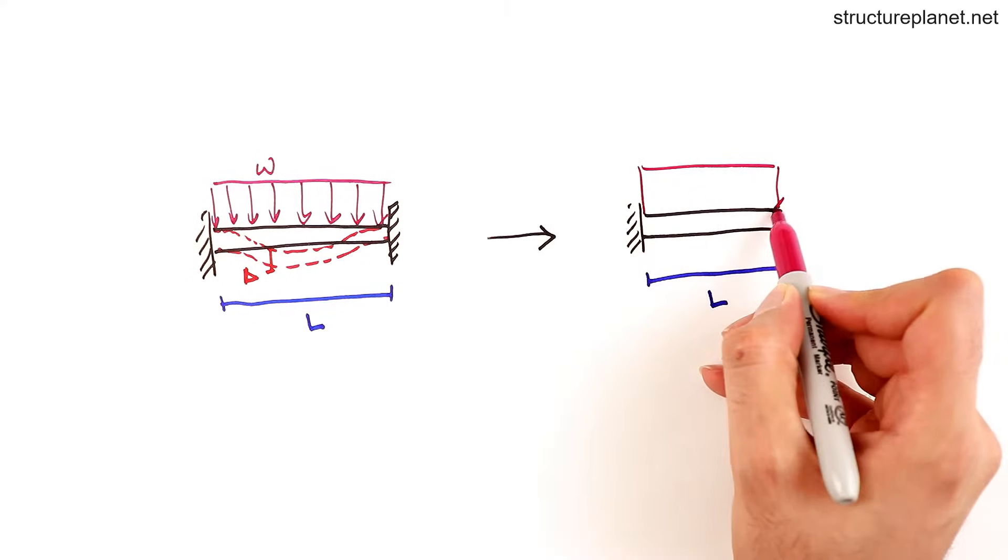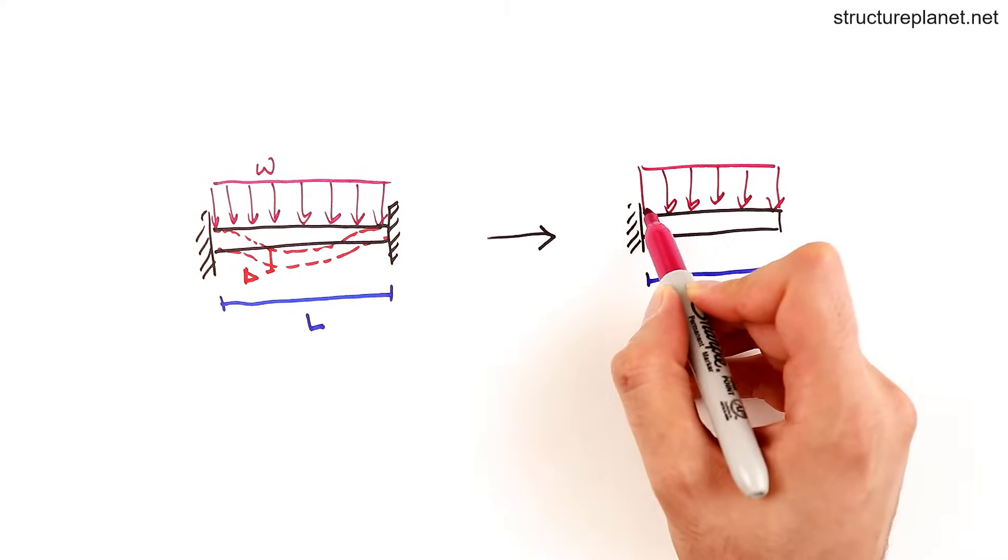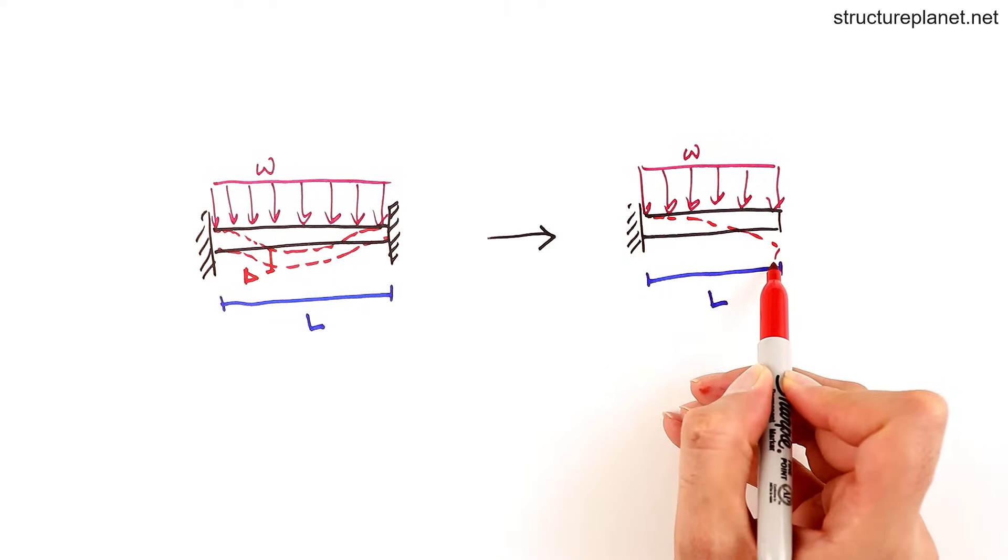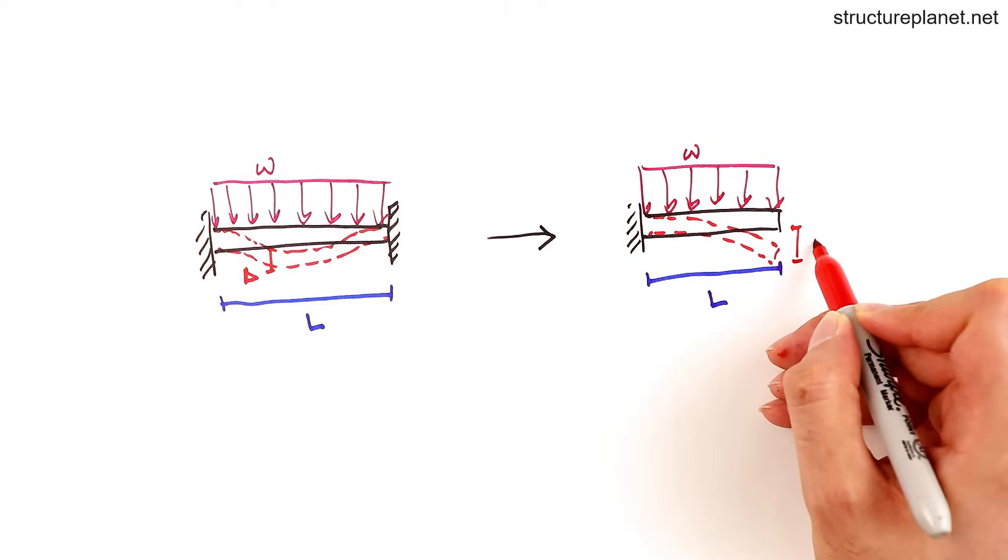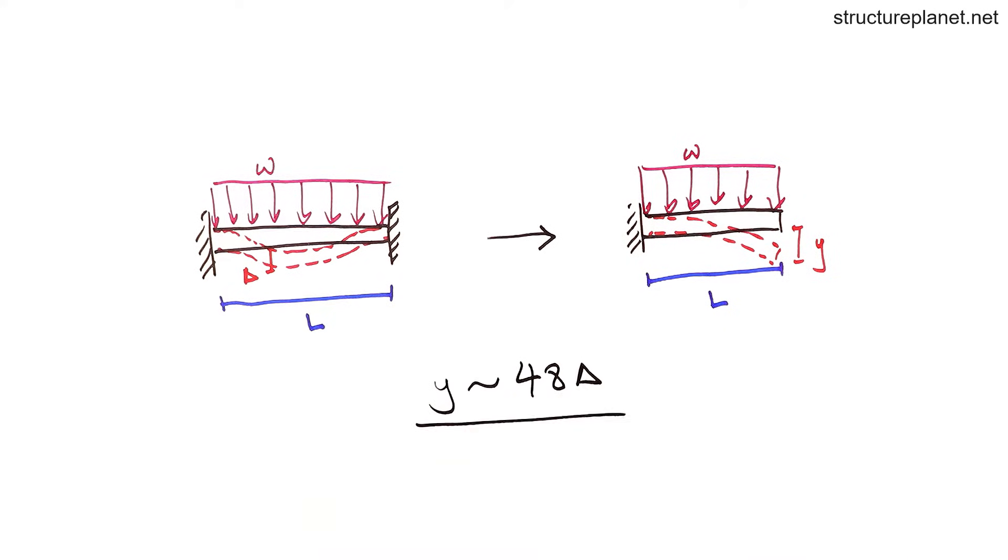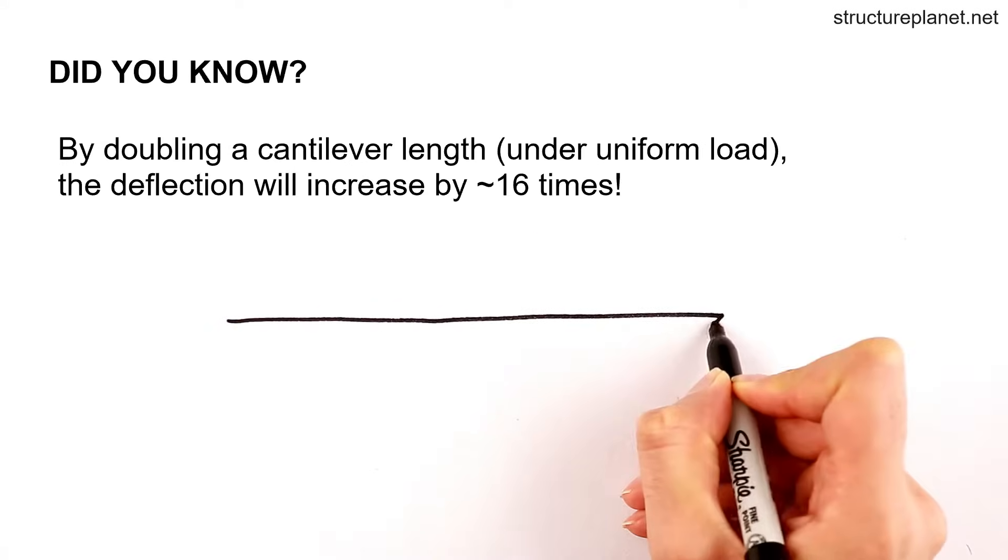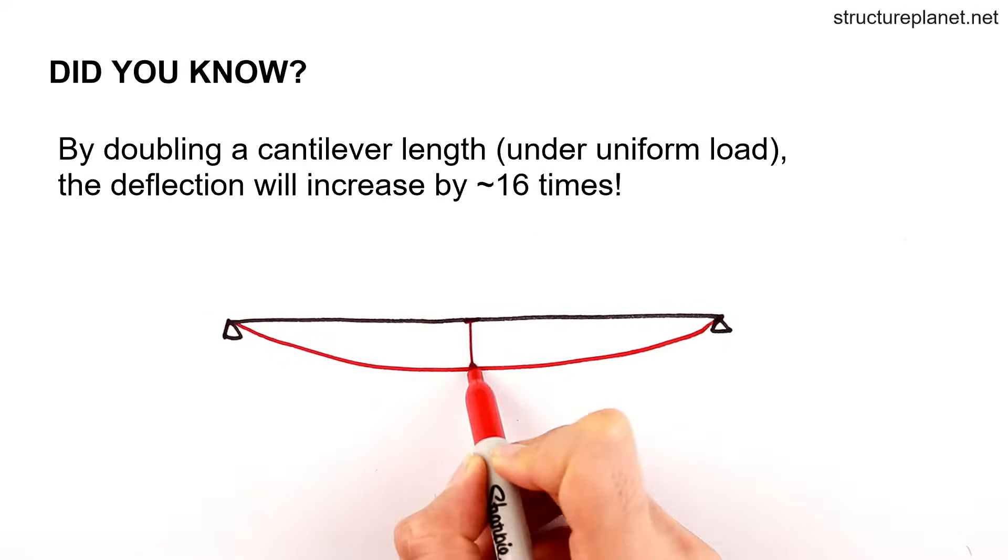Now if we remove one of the supports and keep everything else the same, this beam will deflect about 48 times delta at its free end. The cantilever will also deflect about 10 times more than a beam which has two pinned supports. These are significant differences.